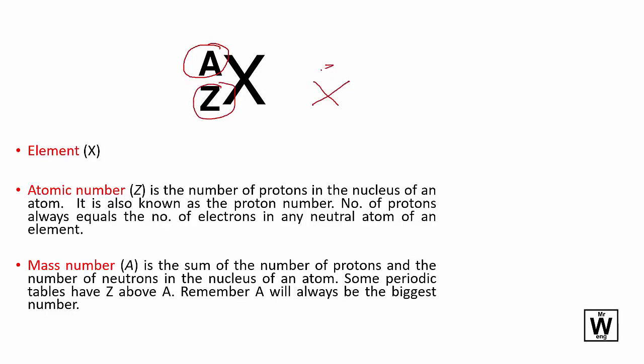Often the proton number is at the front and the mass number is at the bottom. The mass number is always the bigger number, much greater than Z.